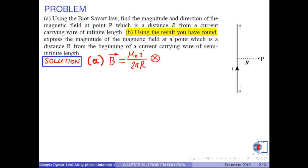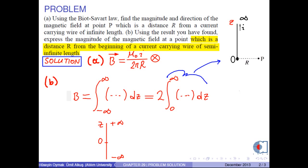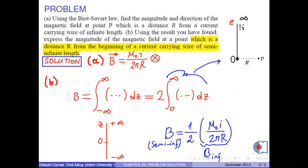Part B: Using the result you have found, express the magnitude of the magnetic field at a point which is a distance r from the beginning of a current-carrying wire of semi-infinite length. The integral used to find the magnetic field of the infinite length has limits negative infinity and positive infinity, and we know it equals twice the integral from 0 to infinity, where that integral corresponds to the semi-infinite length. Hence, the magnetic field of the semi-infinite length is 1/2 times μ₀i over 2πr, where μ₀i over 2πr is the magnetic field of the infinite length. So we write B = μ₀i over 4πr.